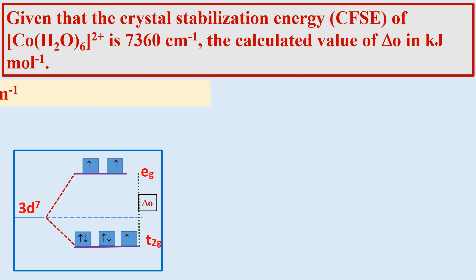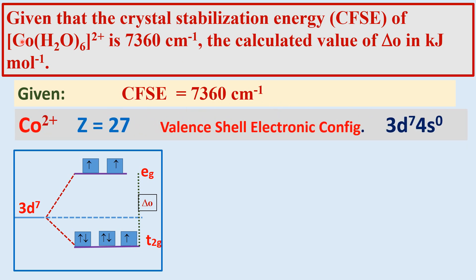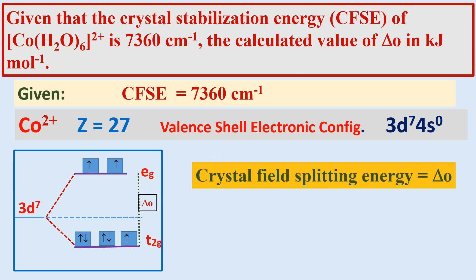Let us first write what data are given in this problem. The crystal field stabilization energy is equal to 7360 cm⁻¹, and the central metal ion is cobalt-2-plus, with atomic number 27. Its outer shell electronic configuration is 3d⁷ 4s² — but as Co²⁺, two electrons are lost. They have asked to calculate Δ₀ in kilojoule per mole.